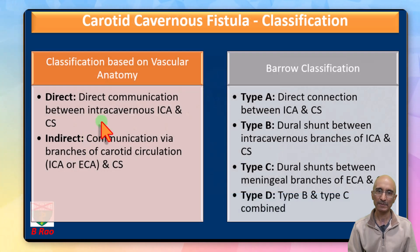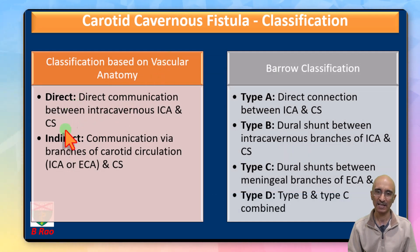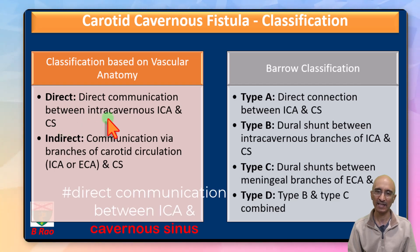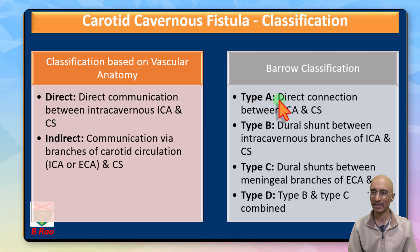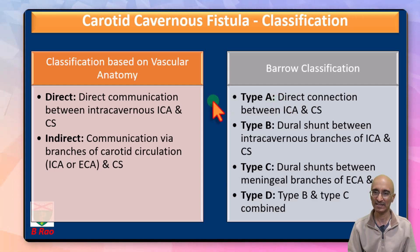In terms of classification, carotid cavernous fistulas can be classified based on vascular anatomy as direct or indirect type. Our patient had a direct communication between the cavernous segment of the ICA and the cavernous sinus. There is also the Barrow classification, which is of four types. Our patient had a Type A carotid cavernous fistula, with direct communication between the ICA and the cavernous sinus.